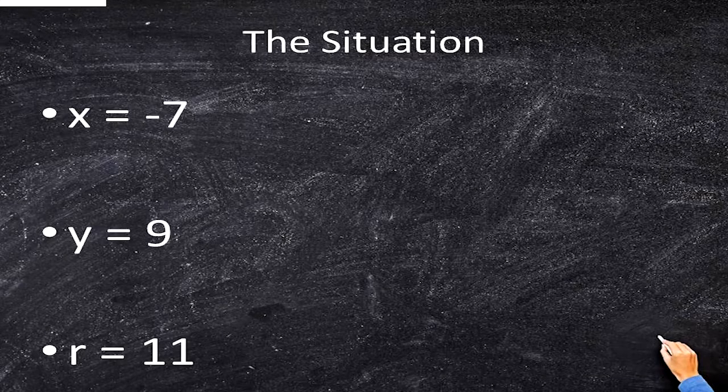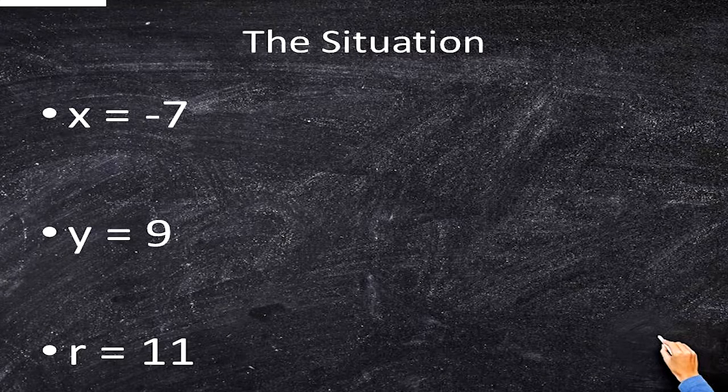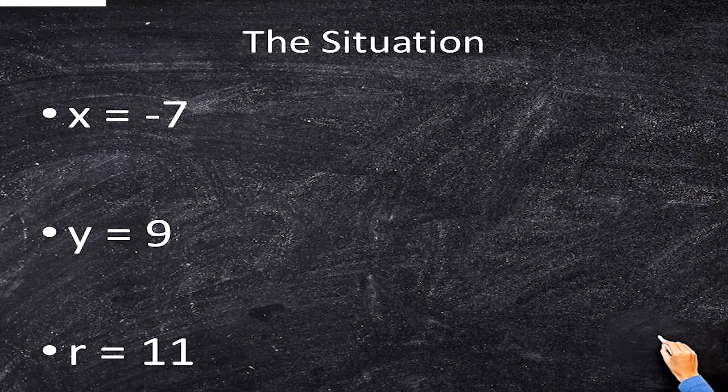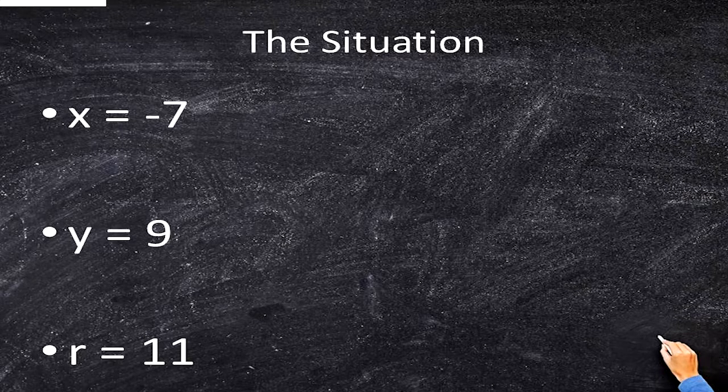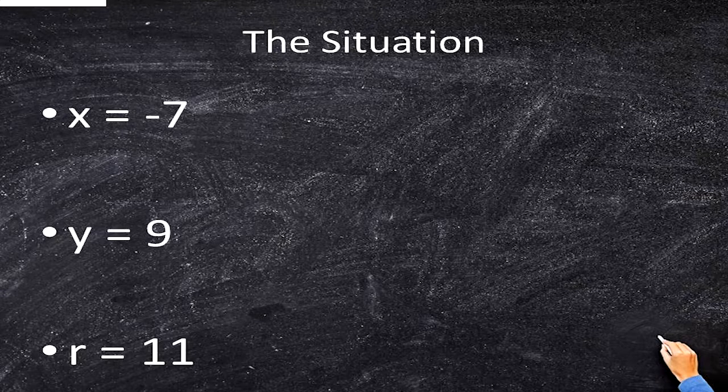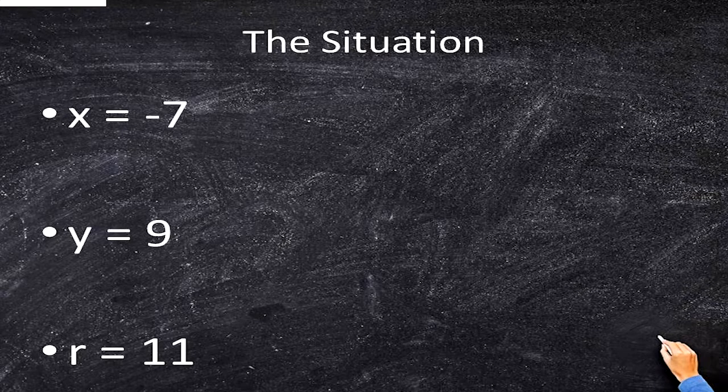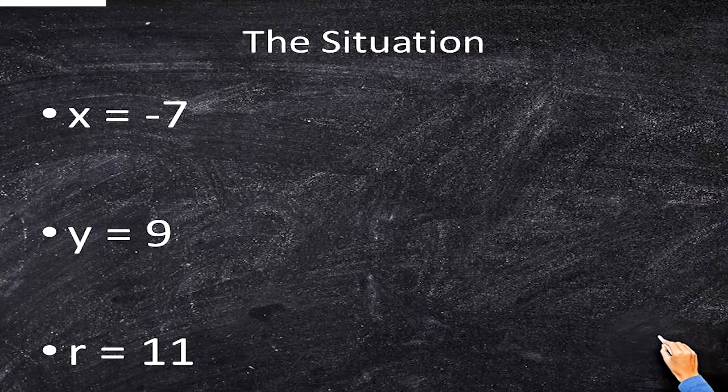The situation is this: we've got an x value and a y value, so Cartesian coordinates, and we also have the dimension of the circle, so 11. How are we going to write this in the equation of a circle?